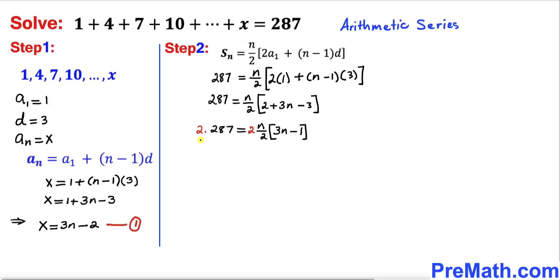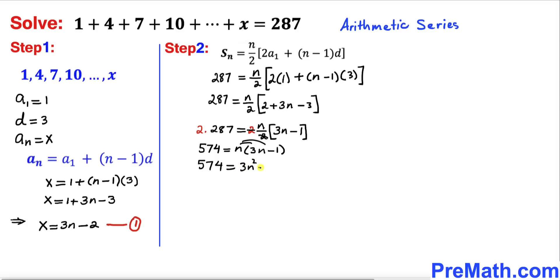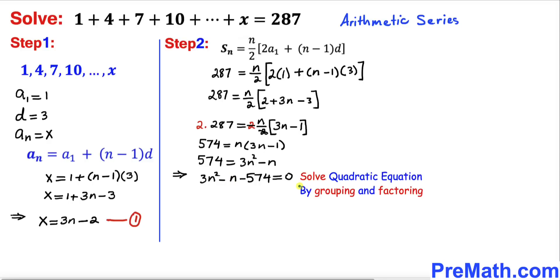So 2 times 287 gives us 574, and after the 2's cancel we have 574 equals n times 3n minus 1. Distributing on the right hand side gives 3n squared minus n. Moving everything to the left hand side, we get the quadratic equation 3n squared minus n minus 574 equals 0, which we will solve by grouping and factoring.